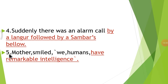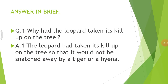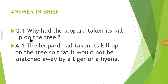Now let's move to today's new topic: Answer in Brief. Question 1: Why had the leopard taken its kill up on the tree? The answer is: The leopard had taken its kill up on the tree so that it would not be snatched away by a tiger or a hyena.